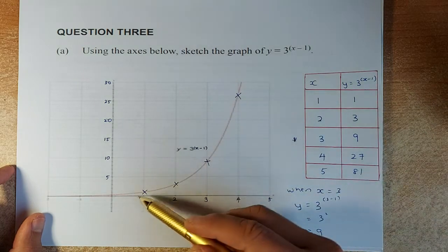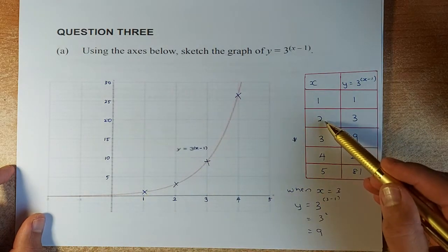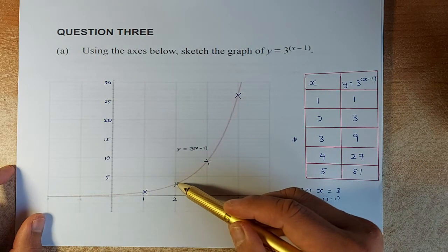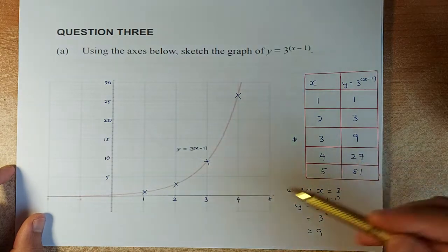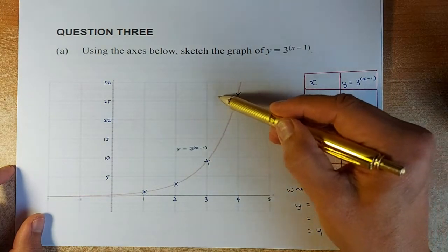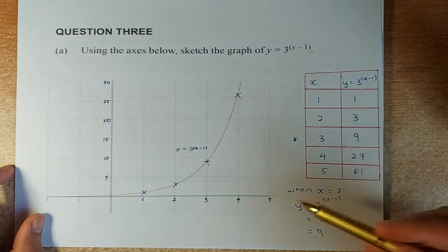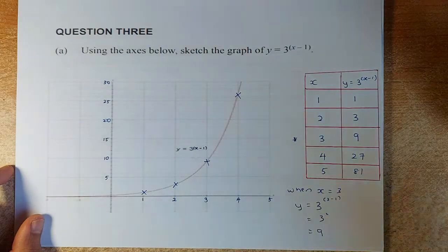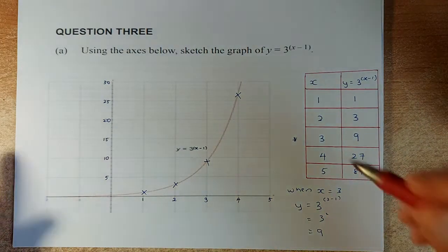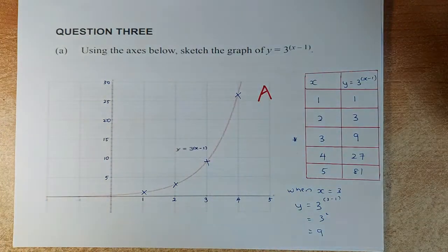Similarly, we're going to plot all the points. When x is 1, y is 1, so 1,1 is here. When x is 2, y is 3. When x is 3, y is 9 as we've done before. When x is 4, y is 27, so 4, 27 is here. And unfortunately when x is 5, 81 is way up there, we can't draw that on the graph. So that is how you draw that graph, and that will give you an easy achieve in this paper.